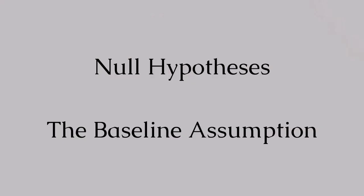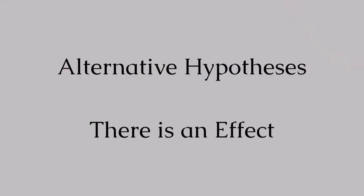The p-value is an output that is tied to hypothesis testing. In statistics, there are two types of hypotheses. The null hypothesis is the status quo or baseline assumption — it states that there is no effect or difference. The alternative hypothesis is what you aim to prove — it claims that there's an effect or a difference. Whenever a researcher or data analyst starts to look at their data, they are considering these two hypotheses.